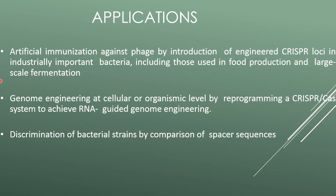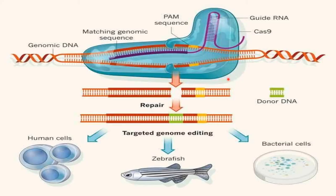Applications include: artificial immunization against phage by introduction of engineered CRISPR loci in industrially important bacteria, including those used in food production and large-scale fermentation; genome engineering at cellular or organismic level by reprogramming of the CRISPR-Cas system to achieve RNA-guided genome engineering; and discrimination of bacterial strains by comparison of spacer sequences, as well as genome editing.